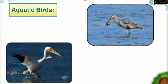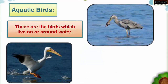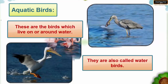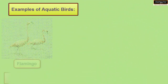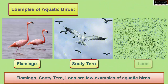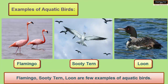Aquatic Birds: These are the birds which live on or around water. They are also called water birds. Flamingo, Sooty Tern, and Loon are a few examples of aquatic birds.